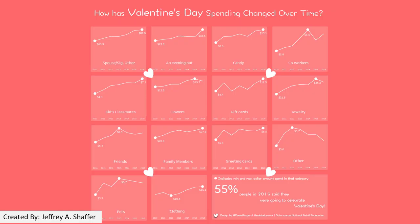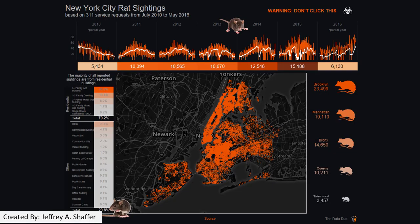Another clear question example is: how has Valentine's Day spending changed over time? They use a set of different line charts and highlight specific data points. At the bottom, there is also a summary of the data. Note that the question does not have to be overtly asked in the visualization — even without a question in the title, this visualization answers all sorts of questions about rat sightings in New York City.